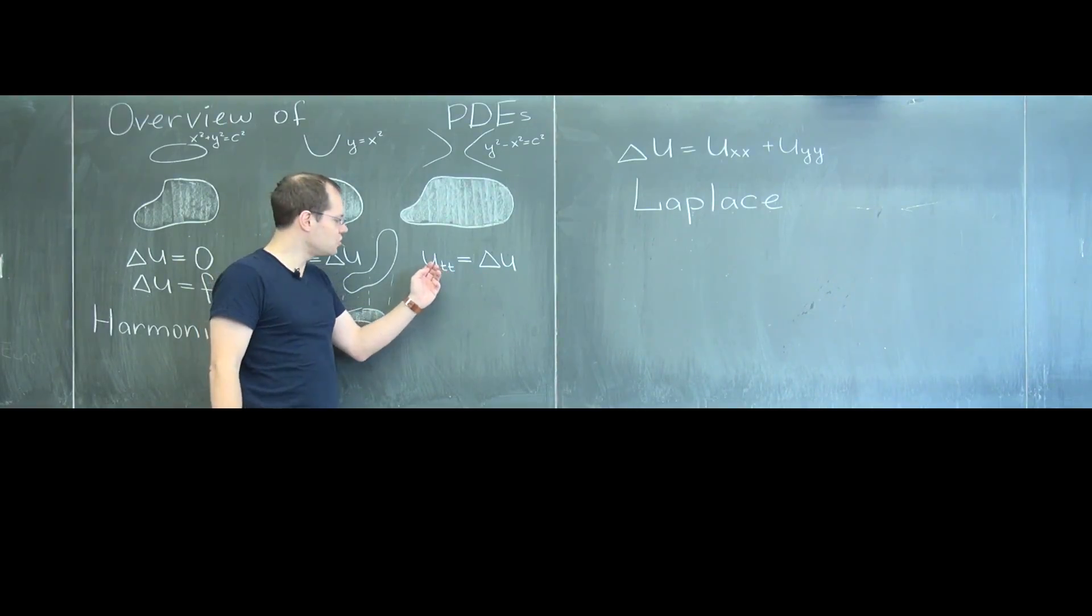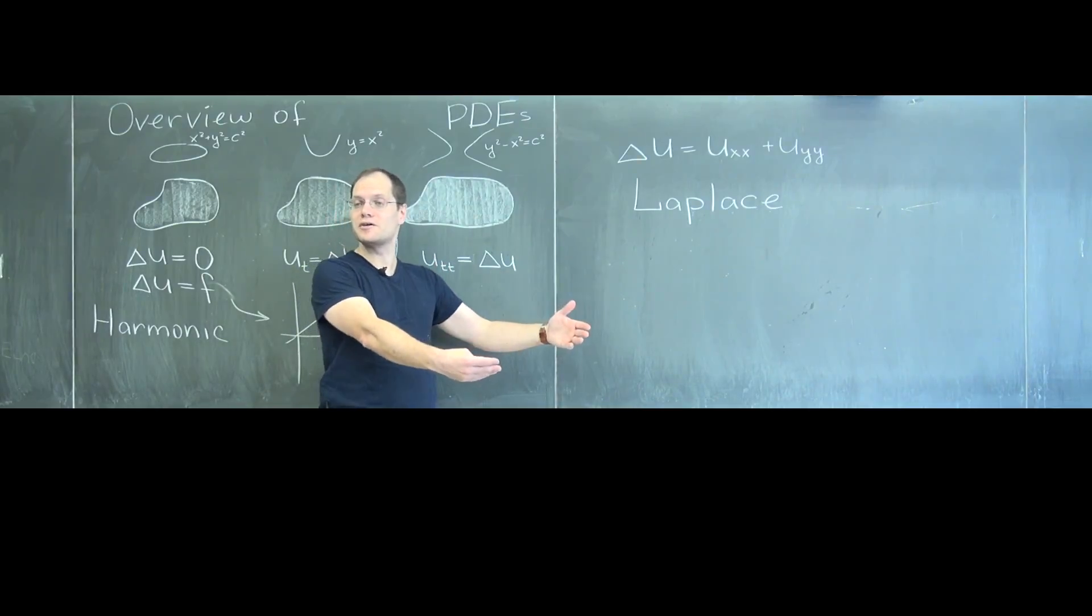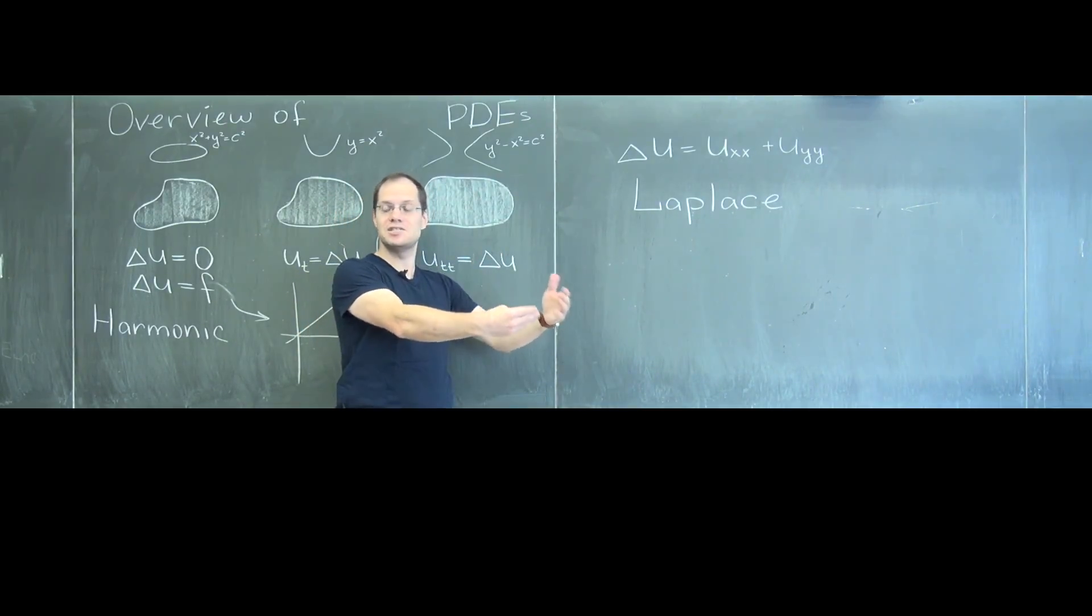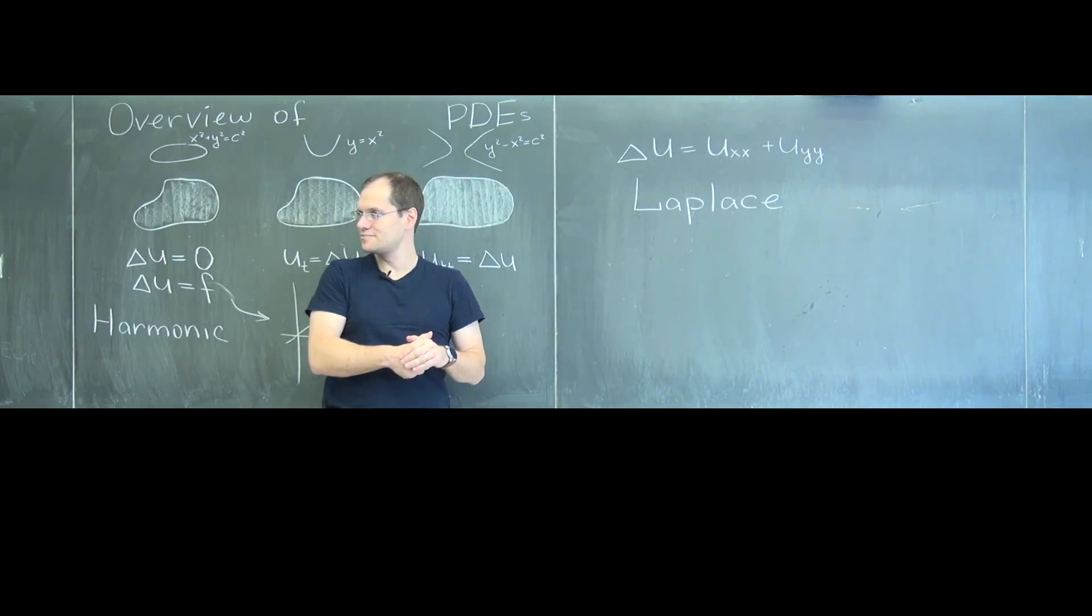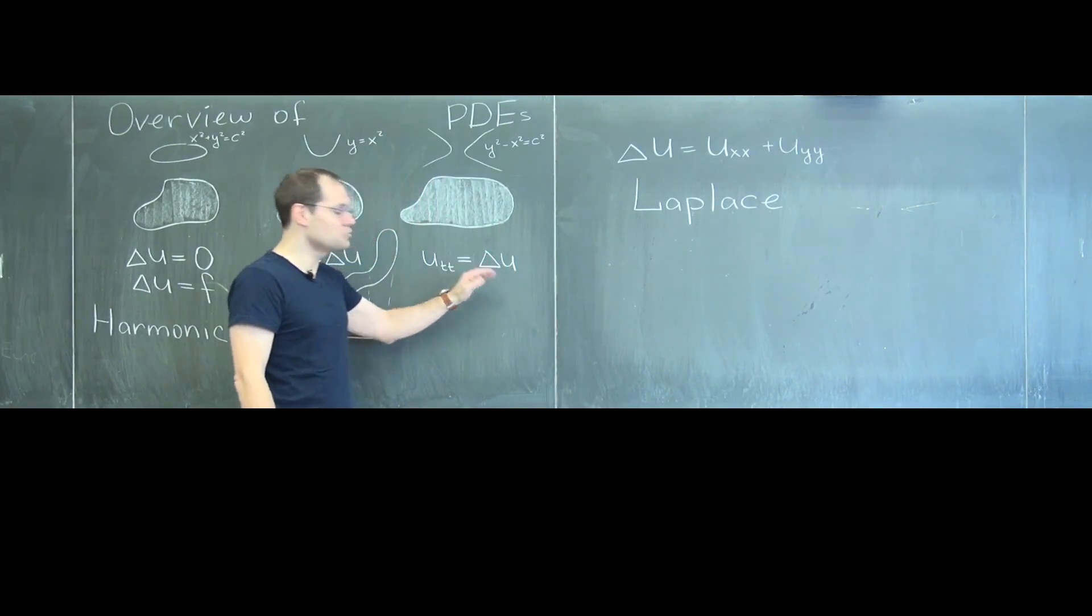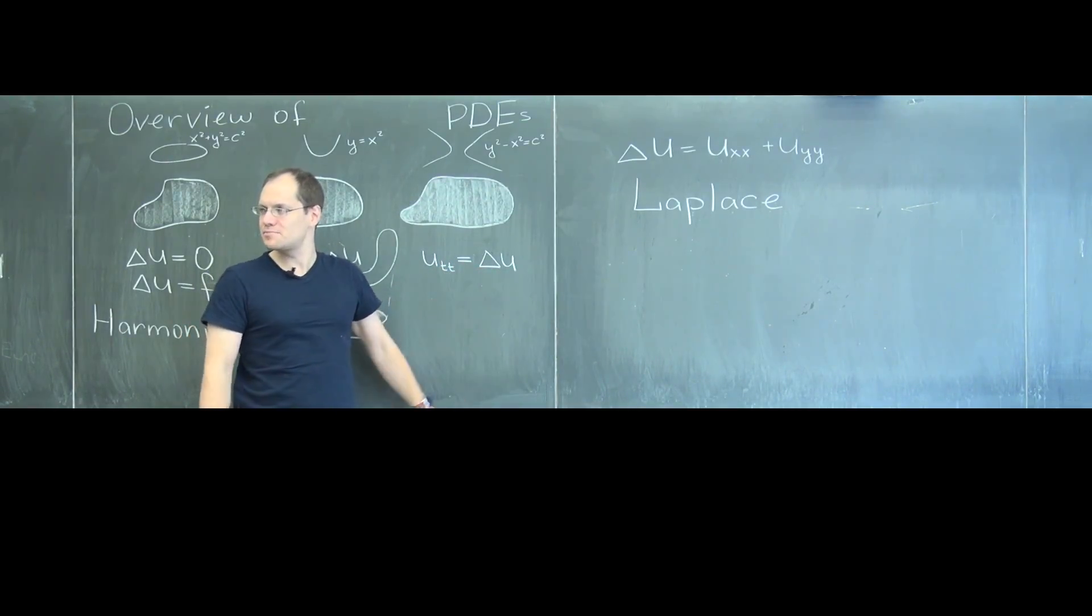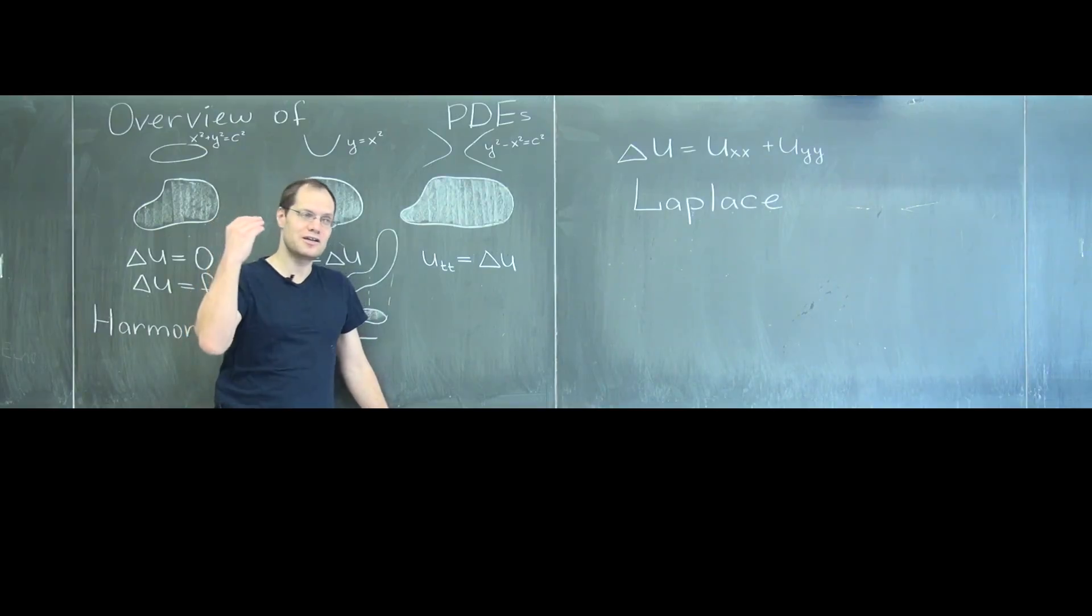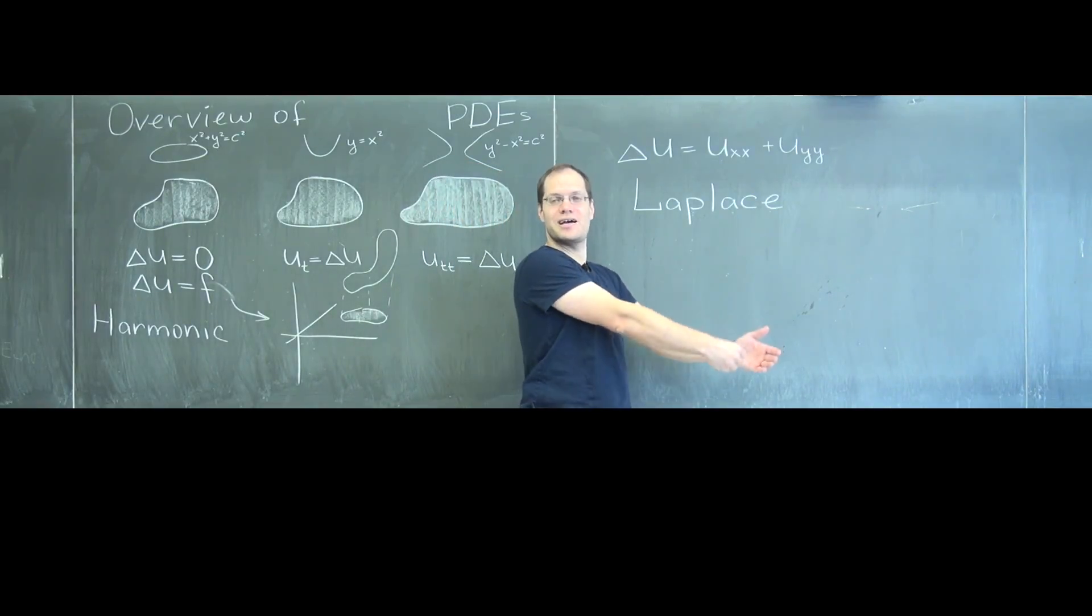You guys are with me on that? So when acceleration is proportional to the Laplacian, the function will start going to the place where Laplacian is zero. That's where it wants to go. It wants to go to the equilibrium, but when it reaches the equilibrium, by the time it reaches the equilibrium, it will have picked up some speed. And so it'll overshoot it and go as far perhaps to the other side.